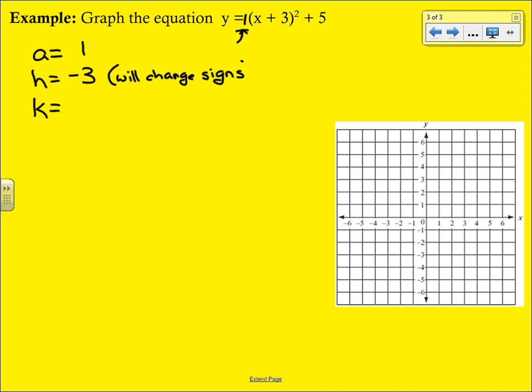Basically, whenever you're looking at the h value, it's always going to be the opposite of the number that's inside the parentheses. Some people like to think of it that way. Our k value is just 5. That's always going to stay the same.